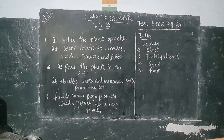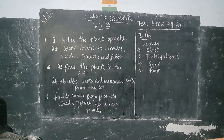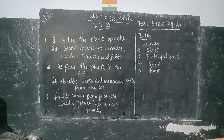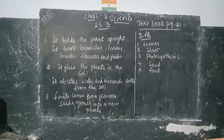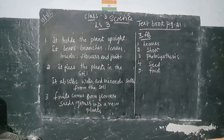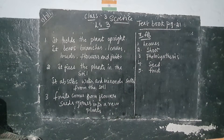We will learn how the plant looks and what their functions are. Plants have flower, fruits, stem, leaf, and roots. The part of the plant below the stem, lower to the stem, is called the root. The part of the plant that remains under the ground is called root, and the part above the ground is called shoot.